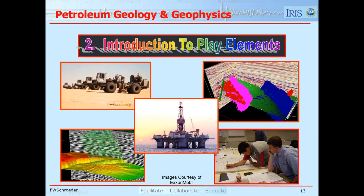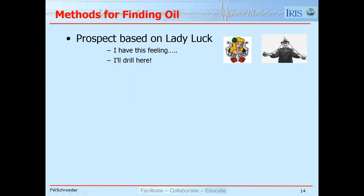So that's enough of the logistics and background. Let's get on to today's topic: the introduction to play elements. There are various ways in which people can find oil. One way is to prospect based on lady luck — 'I have a feeling we should drill here.' The picture shows a gentleman holding what's called a divining rod, which was somewhat popular in the 1910s, 1920s, and 1930s. He would get people to invest, walk around, and when the divining rod swung downwards, that was where they decided to drill.